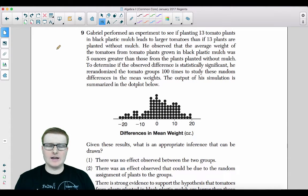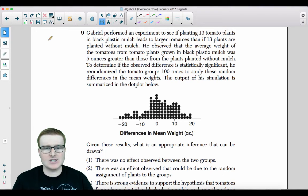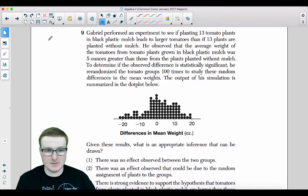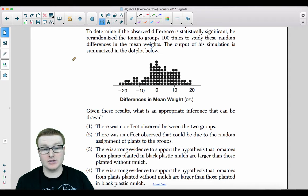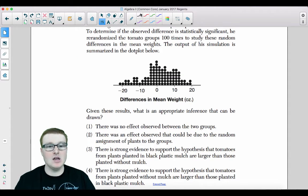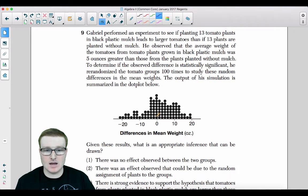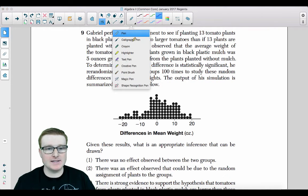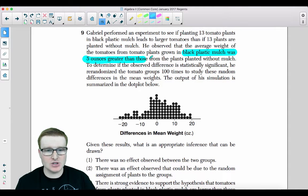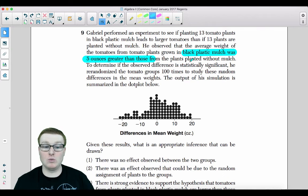Moving on to number nine. I remember this question I wanted to throw up. Gabriel performed an experiment to see if planting 13 tomato plants in black plastic mulch leads to larger tomatoes than if 13 plants are planted without mulch. He observed that the average weight of tomatoes from the tomato plants grown in black plastic mulch was five ounces greater than those from the plants planted without mulch. To determine if the observed difference is statistically significant, he re-randomized the tomato groups 100 times to study these random differences in the mean weights. The output of his simulation is summarized in the dot plot below. Given these results, what is an appropriate inference that can be drawn? So here's the thing. Black plastic mulch was five ounces greater than when he planted it in mulch compared to the one without.